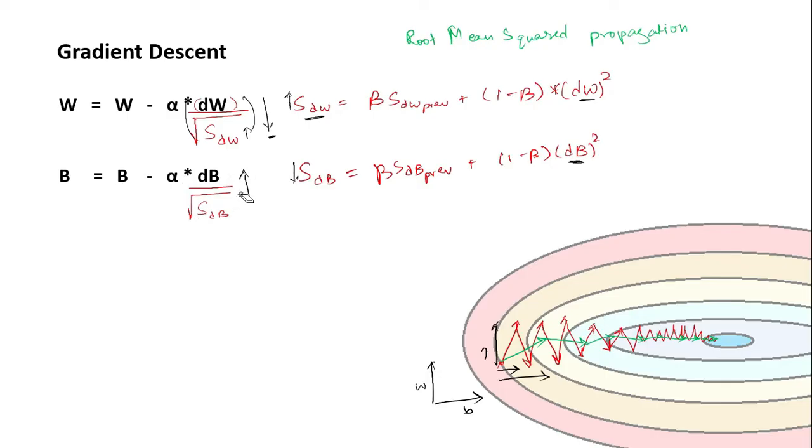Thus to overcome that, what we do is that we add this term epsilon to this, and the value of the epsilon will be taken as 10 power minus 8. So we add this epsilon so that the entire value does not go very small and thus we don't end up overshooting. Also the value of this hyperparameter beta is usually taken as 0.999. So with these two changes we can implement RMSprop and it will speed up the training of our model.